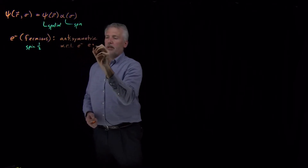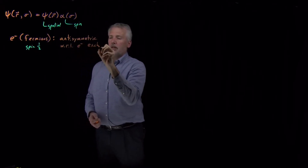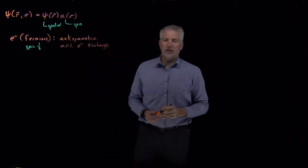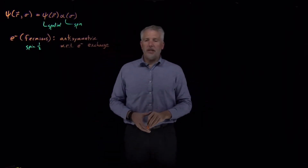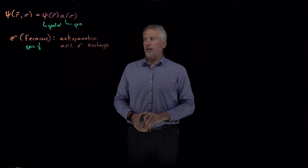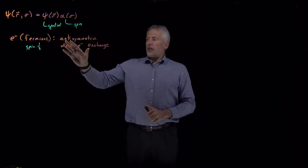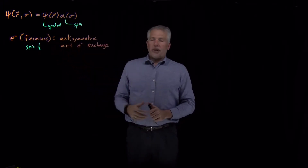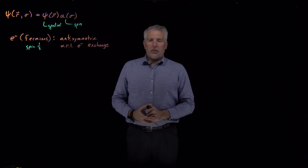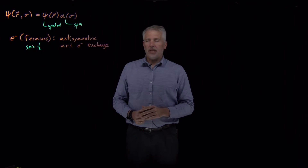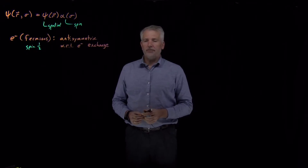I'll explain what that means, but it's a very important property of electrons that we need to understand to understand how electron wave functions behave. When we talk about symmetry of functions, often we're talking about a symmetry about the x-axis or z-axis or something like that — but this type of symmetry is a little bit different.